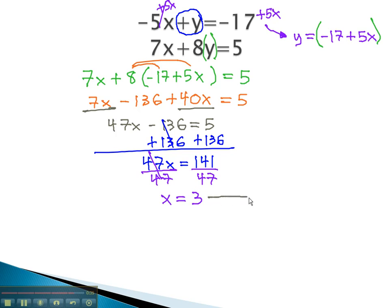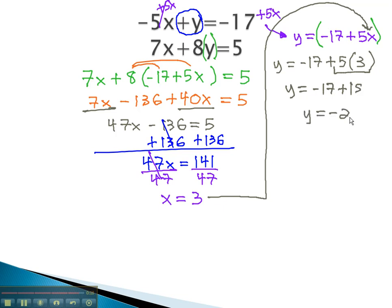Again, we still need to know what y is, so we go back to that y equals equation and replace our x with that 3. y is equal to negative 17 plus 5x, or 5 times 3. Multiplying, we find y is negative 17 plus 15, or y is negative 2.